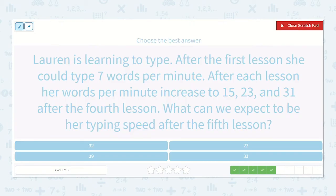Lauren is learning to type. After the first lesson, she could type 7 words per minute. After each lesson, her words per minute increased to 15, 23, and 31 after the fourth lesson. What can we expect to be her typing speed after the fifth lesson? So we have 7, 15, 23, 31, and then our missing number.